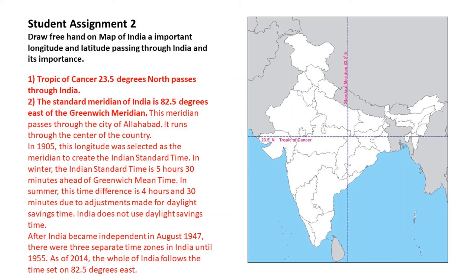In summer, the time difference from GMT is 4 hours and 30 minutes due to adjustments for Daylight Savings Time — however, India does not use Daylight Savings Time. After India became independent in August 1947, there were three separate time zones until 1955. As of 2014, the whole of India follows the time set on 82.5 degrees east.